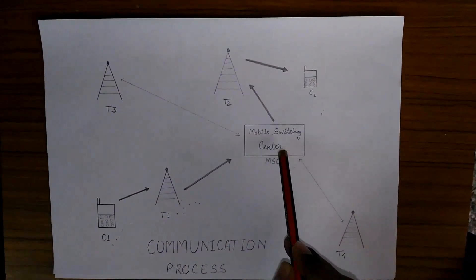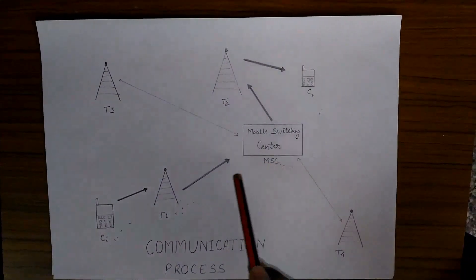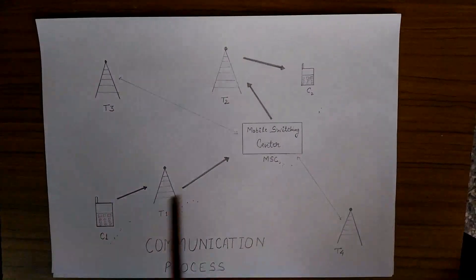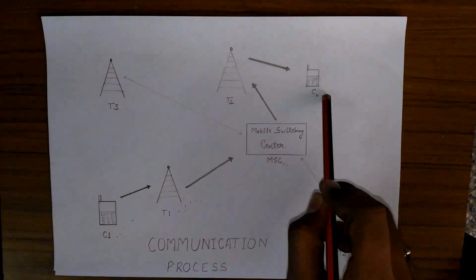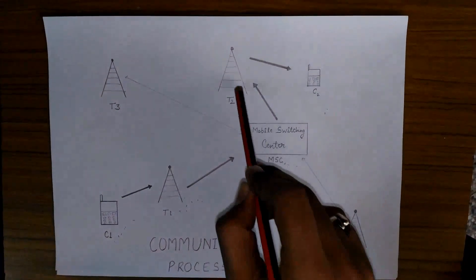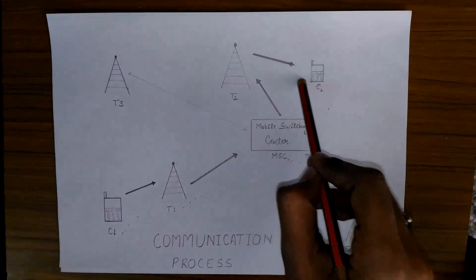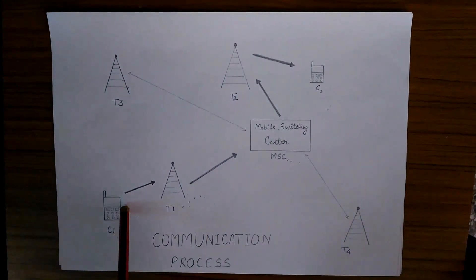Now what is a mobile switching center? A mobile switching center is a center which is connected to all the base stations of an area. When you are calling, the mobile switching center locates where the required cell phone is and connects to the base station in that area. That base station sends the information to C2. That's how a simple communication process takes place.